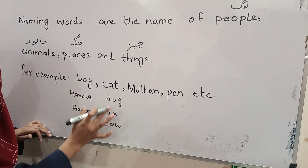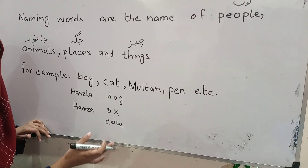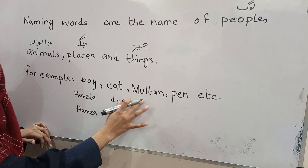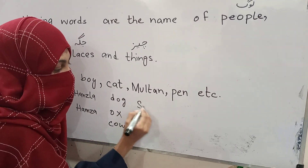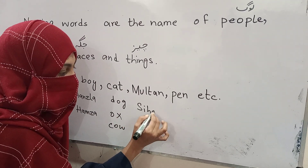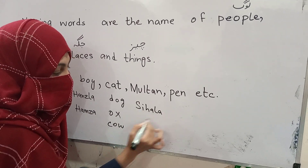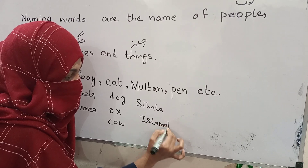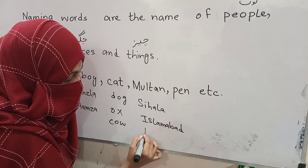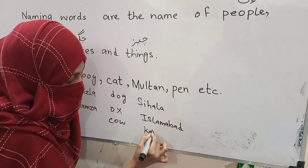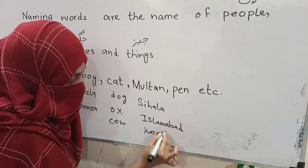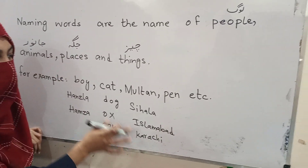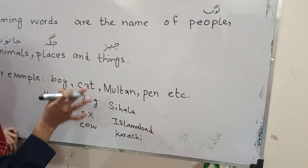Har animal ka ek naam hota hai — cat, dog, ox, cow, fish. Places: Multan, Islamabad, Karachi — yeh places ke naam hain.